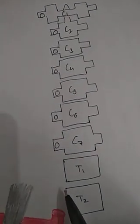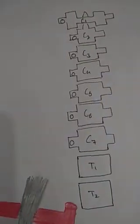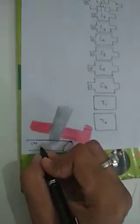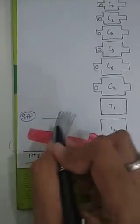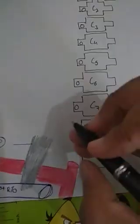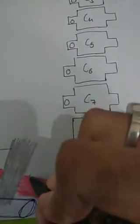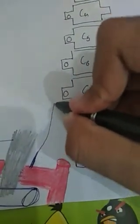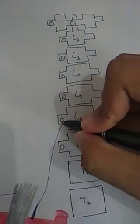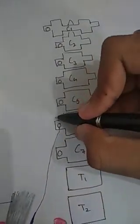It extends from the origin of the subclavian artery — here we can see the first rib, the scalenus anterior muscle, and the subclavian artery — extending to the transverse process of the sixth cervical vertebra, running through the foramen transversaria of the upper six cervical vertebrae.